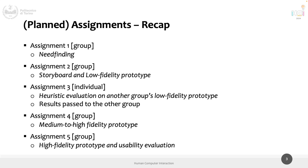Assignment three is the individual heuristic evaluation — it's an evaluation, individual, of another group's low-fidelity prototype. Assignment four is a bridge that brings you from the low-fidelity prototype, which will be on paper and pen literally, to the high-fidelity prototype in assignment five. Assignment five is the high-fidelity prototype and its evaluation, and the high-fidelity prototype will be in code, since you are in a computer engineering degree.